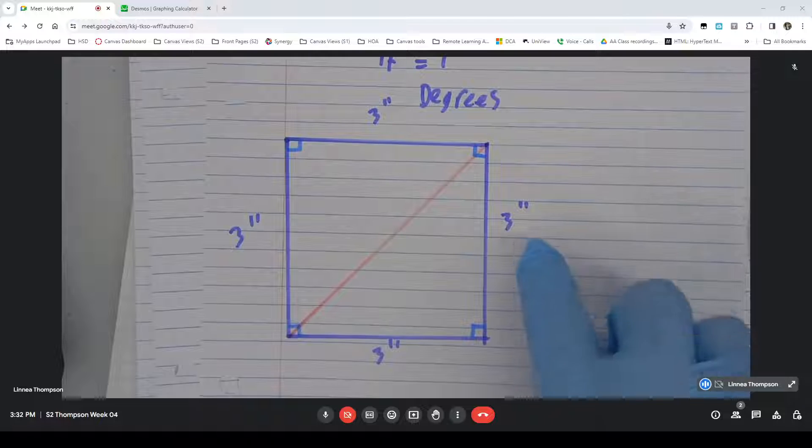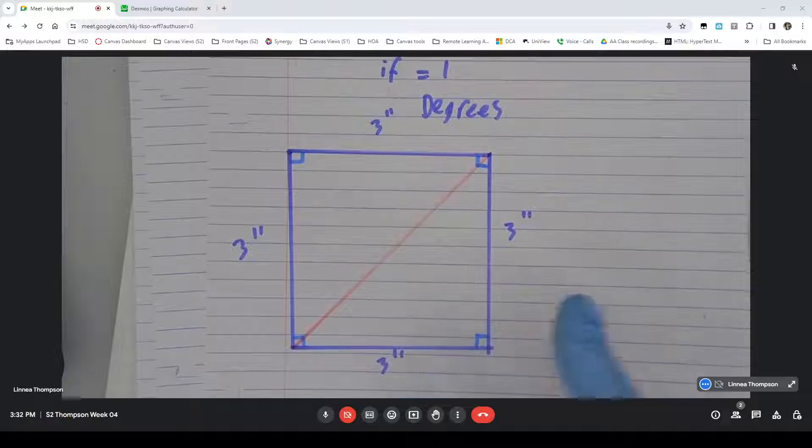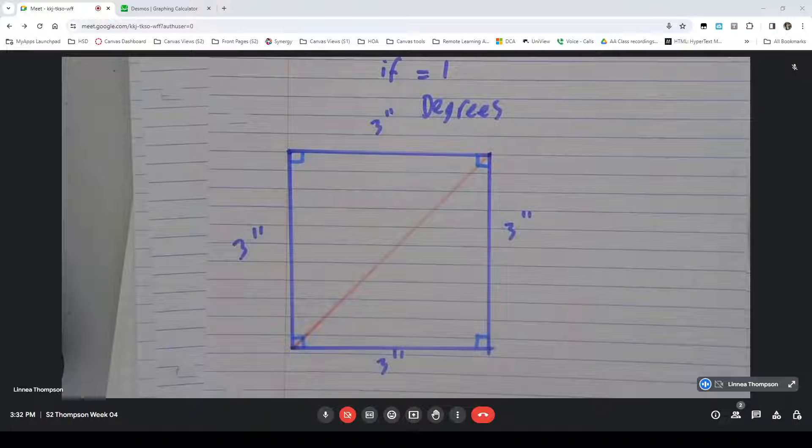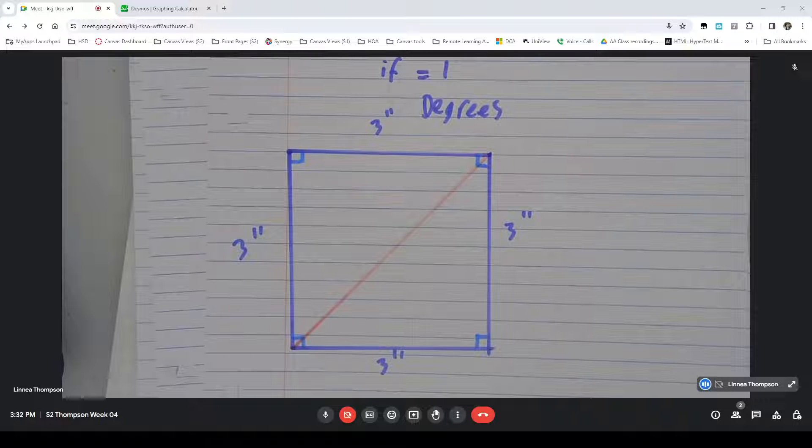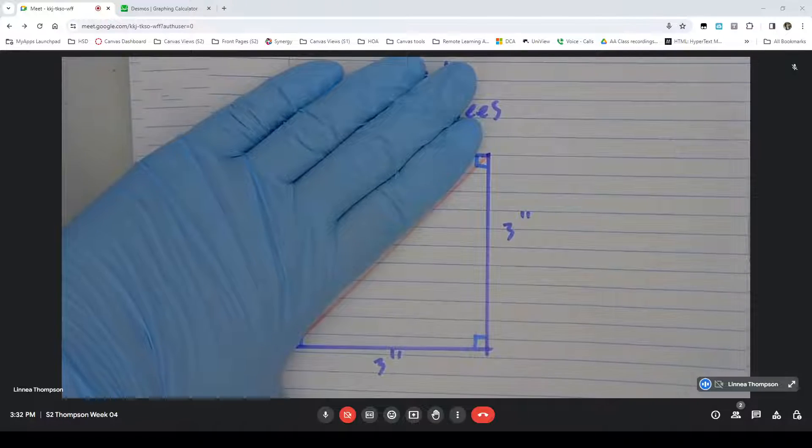Clearly, this is still 3 inches. This is still 3 inches. Those are also still 3 inches. But I've got a triangle right here. And we can figure out a little more about this triangle.